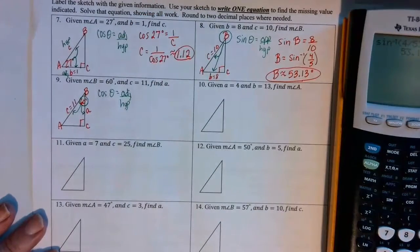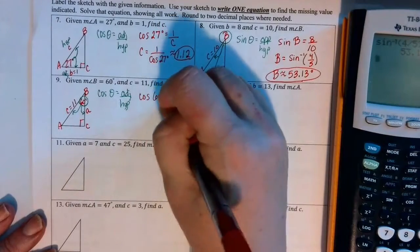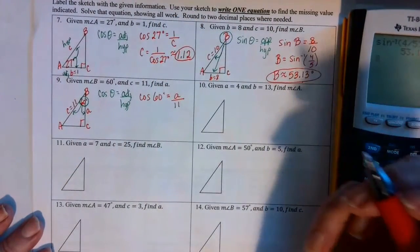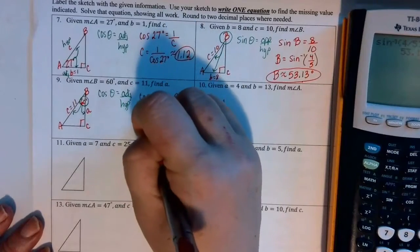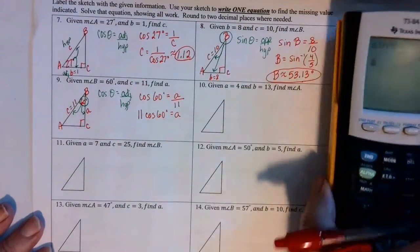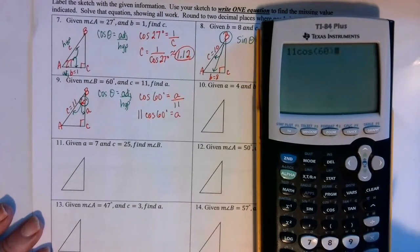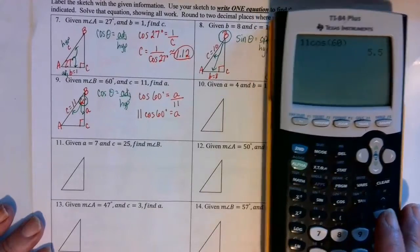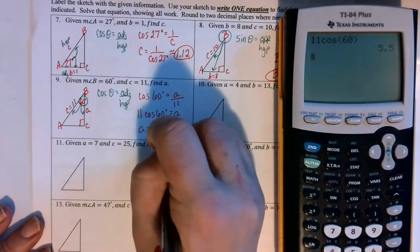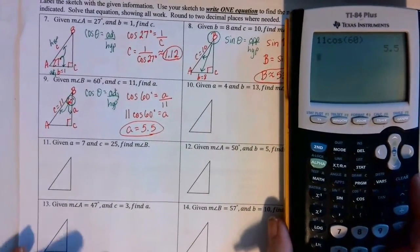So we have cosine of 60 degrees equals a over 11. We multiply both sides by 11 to get a by itself. In degree mode, 11 times the cosine of 60 degrees is exactly 5.5, so we use an equal sign instead of approximately equal because we didn't round anything.